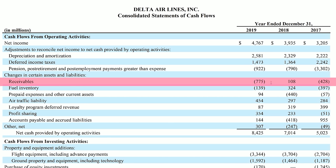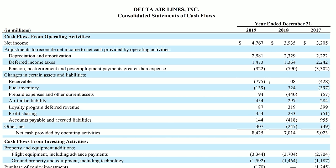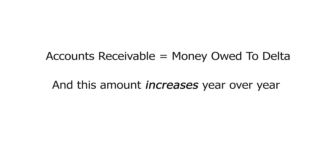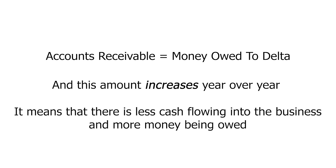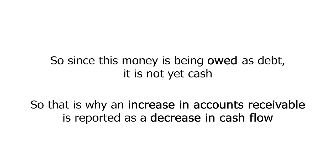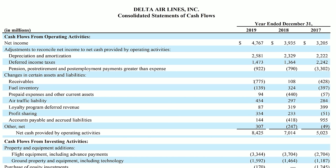Delta had negative $775 million for accounts receivable on their cash flow statement. When you see a negative accounts receivable number, it just means that the accounts receivable actually increased. If the amount owed to the business increases year over year, there's less cash flowing in and more money being owed. Since this money is being owed as debt, it is not yet cash — that's why an increase in accounts receivable is reported as a decrease in cash flow. Conversely, in 2018 Delta reported a positive accounts receivable number, meaning their accounts receivable went down by $108 million and was being paid off faster than it was growing.